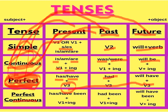In future perfect tense, with both singular and plural we use 'will have' plus the third form of the verb. I will be giving you examples shortly in another slide. First let's understand the rules.